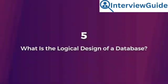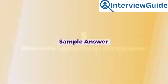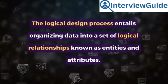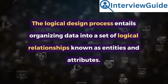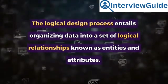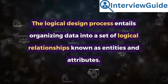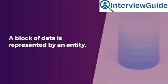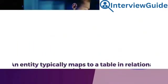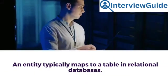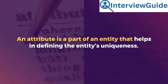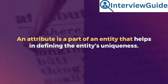Question 5: What is the logical design of a database? Sample answer: The logical design process entails organizing data into a set of logical relationships known as entities and attributes. A block of data is represented by an entity. An entity typically maps to a table in relational databases. An attribute is a part of an entity that helps in defining the entity's uniqueness.